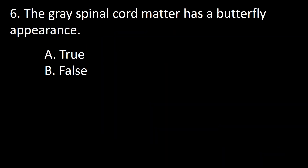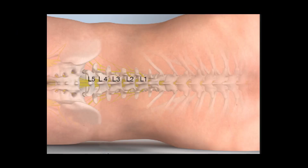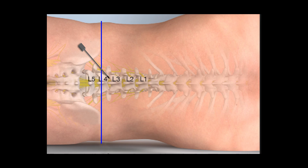So the answer to this question is true. Next question: lumbar puncture should be done at L4–L5 or L3–L4 interspace — true or false? This is a picture of a patient lying down, with the iliac bones and vertebrae traced and the lumbar vertebrae numbered. A line going through the top of each iliac crest passes through L4. This line helps decide where to put the needle for a lumbar puncture. The preferred place is between L4 and L5 spinous processes, or alternatively between L3 and L4 spinous processes.